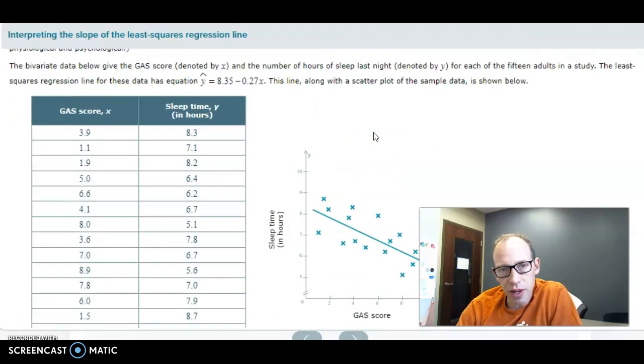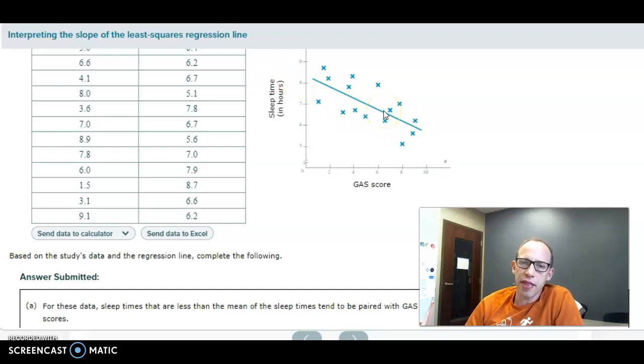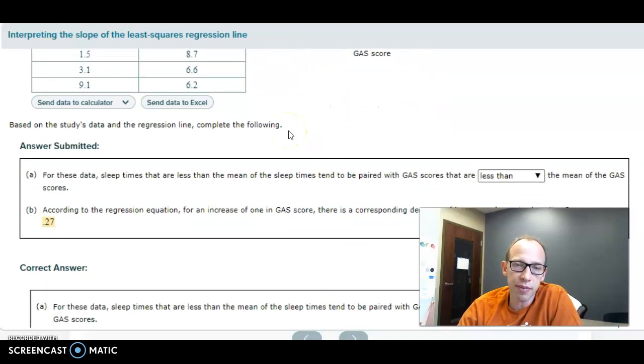One thing to note: the slope here is negative, and you can also see that in the downhill slope. That means we have a negative correlation. The sign of the correlation and the sign of the slope will always match up. Positive correlation, positive slope. Negative slope, negative correlation. The number itself might be different, but the sign will always be the same.